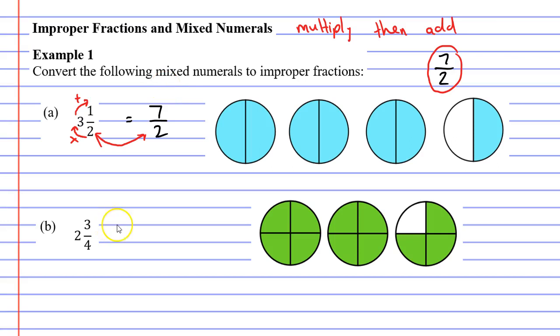Moving now on to question b you will notice that we have two circles completely colored in representing our 2 and then we've got three shaded in of a circle that's been cut into four pieces. That's our fraction 3 over 4 or 3 quarters.